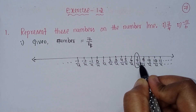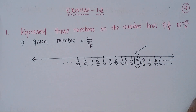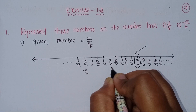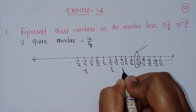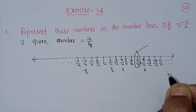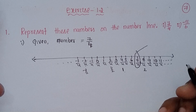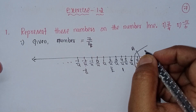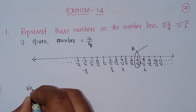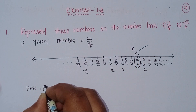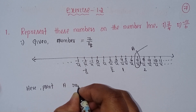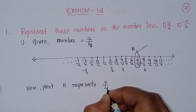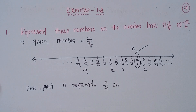This is the solution. Minus 1 by 4, and 1 by 2 — this is 1 by 2, this is 1, this is 2. Point represents 7 by 4 on the number line.